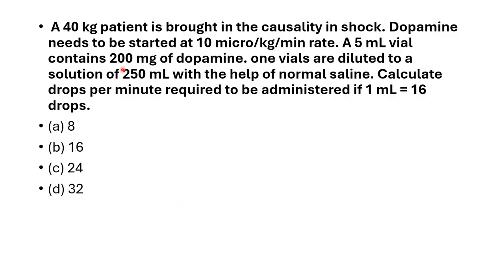Today's case: a 40 kg patient is brought in to the casualty in shock. Dopamine needs to be started at 10 microgram per kg per minute. A 5 ml vial contains 200 milligram of dopamine. One vial is diluted to a solution of 250 ml with normal saline. Calculate drops per minute required to be administered if 1 ml equals 16 drops.